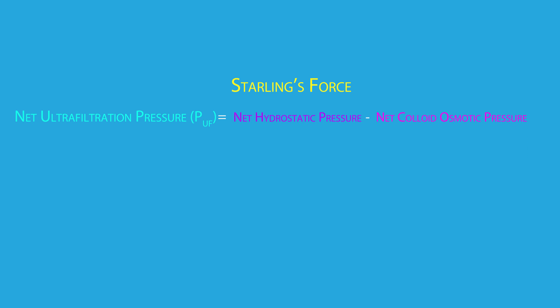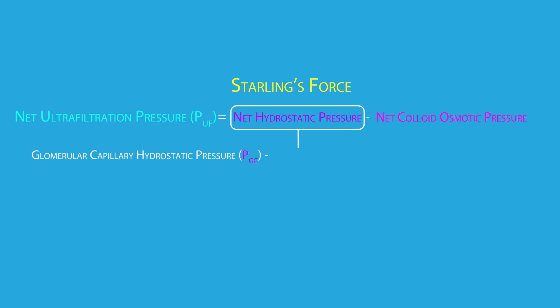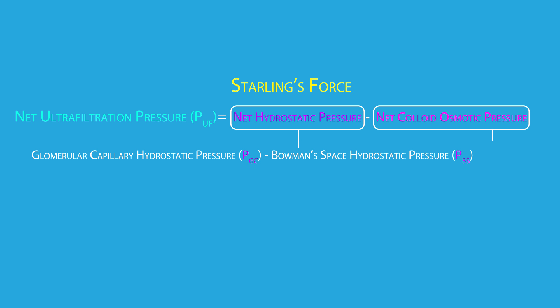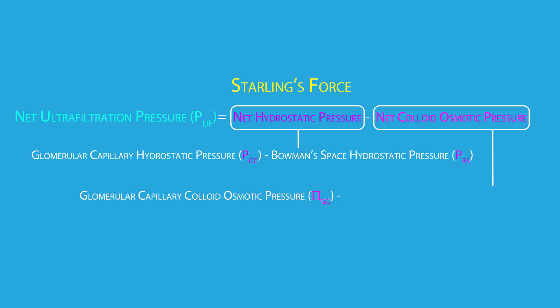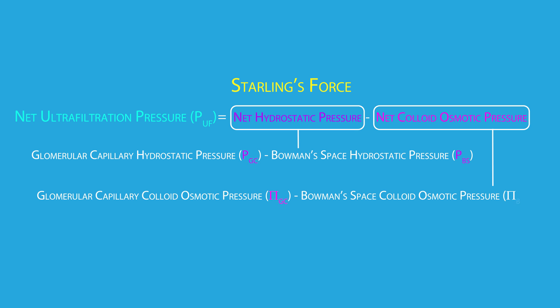In this case, the net hydrostatic pressure is equal to the glomerular capillary hydrostatic pressure minus the Bowman space hydrostatic pressure, while the net colloid osmotic pressure is equal to the glomerular capillary colloid osmotic pressure minus the Bowman space colloid osmotic pressure.